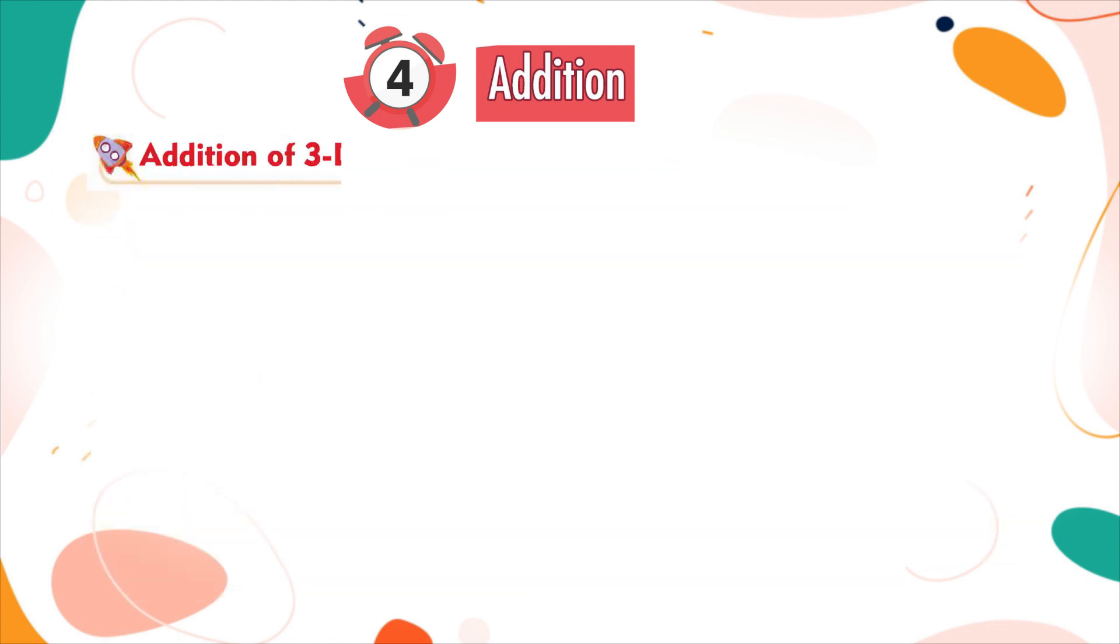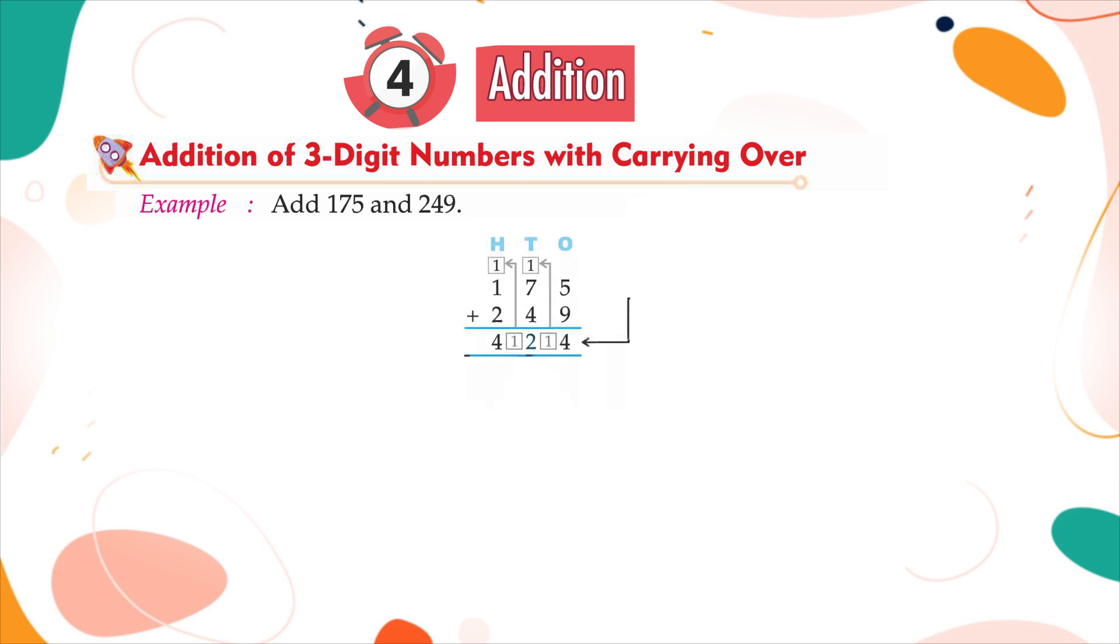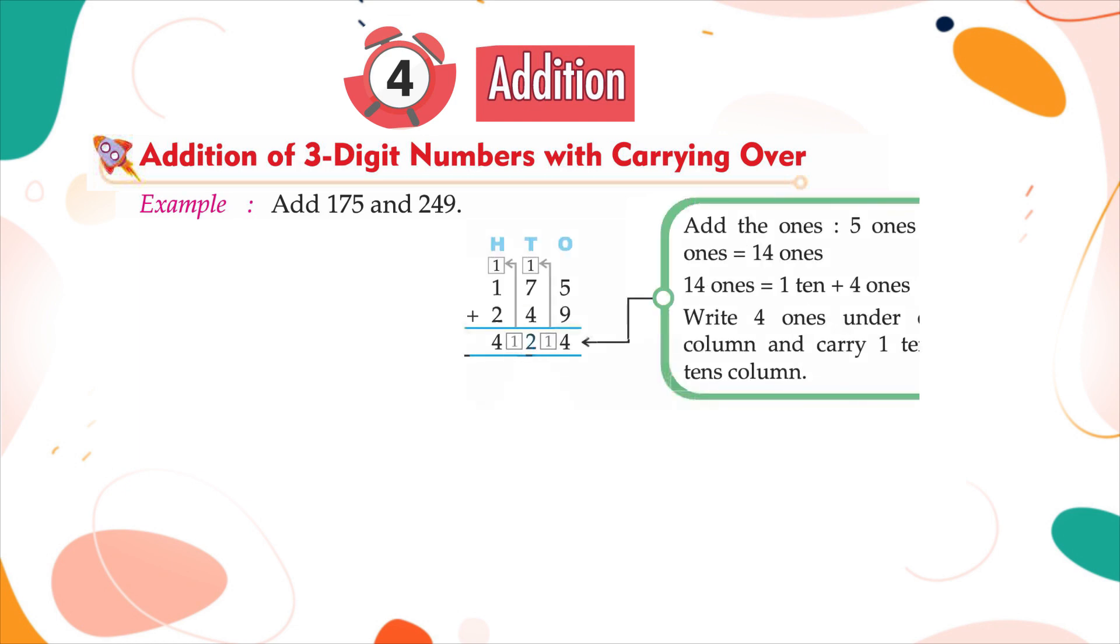Addition of three-digit numbers with carrying over. Example: Add 175 and 249. Add the ones: 5 ones plus 9 ones is equal to 14 ones. 14 ones is equal to 1 ten plus 4 ones. Write 4 ones under 1's column and carry 1 ten to 10's column.